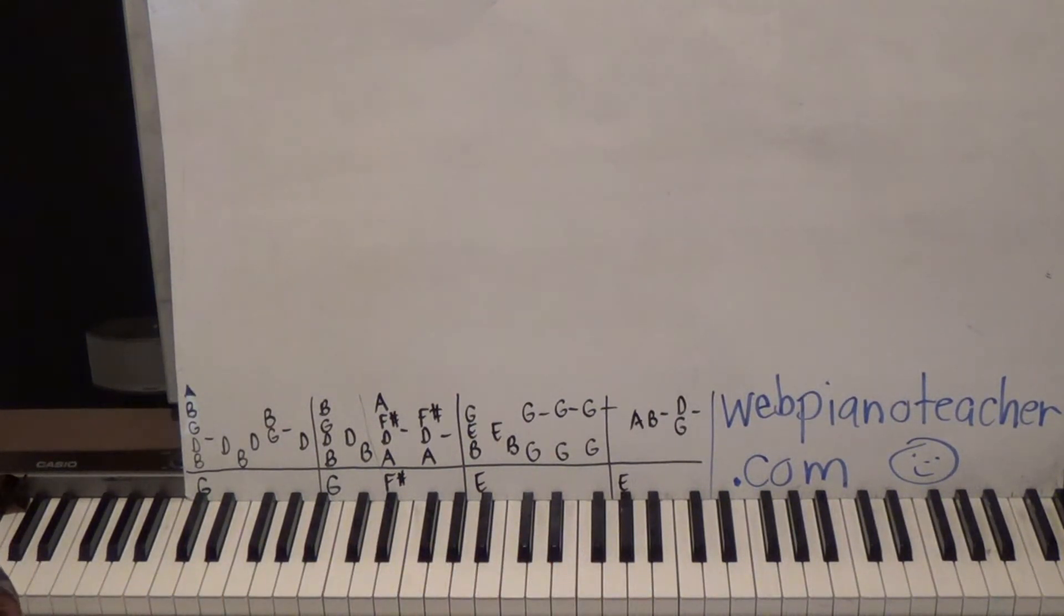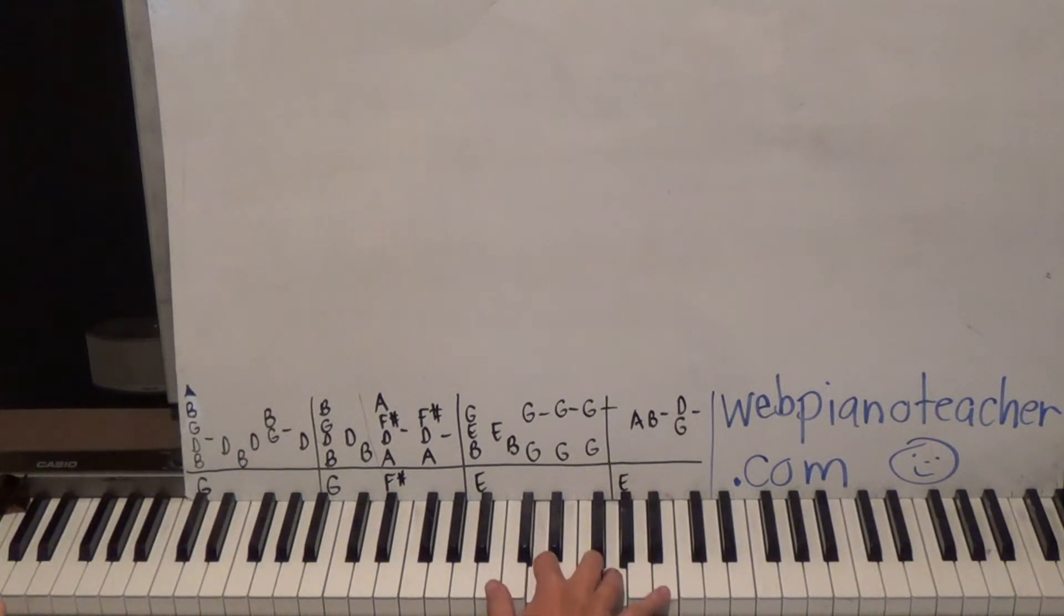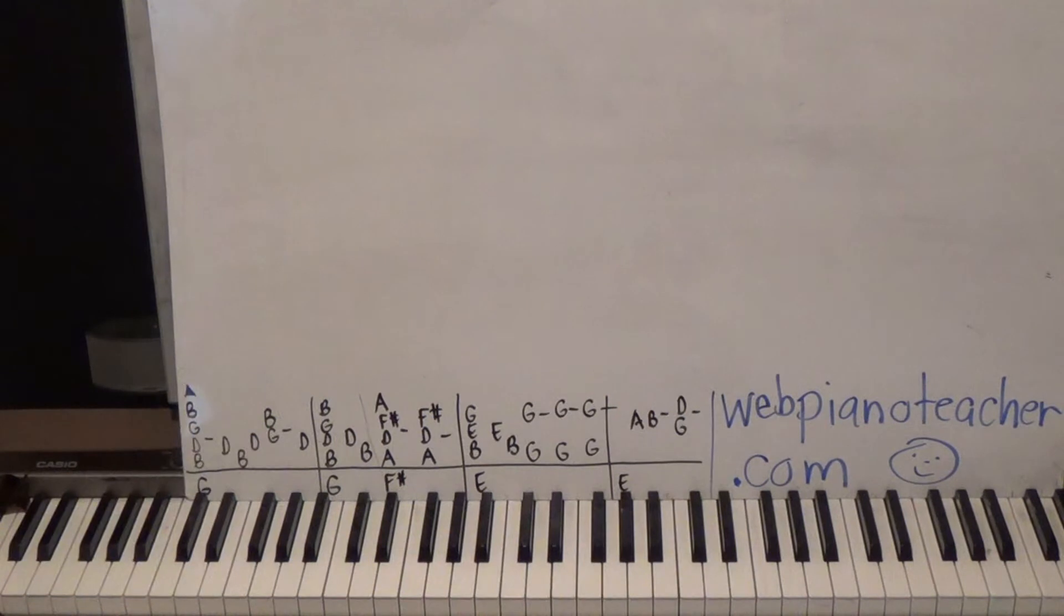We're in the key of G here and we're going to start with our right hand on B, D, G, B with one, two, four, five and then D, B, D, G, B. So it's the same notes that's in the chord right here. So you play the chord and keep your hand there and then one more D at the end. So you're just holding that chord is the rhythm.